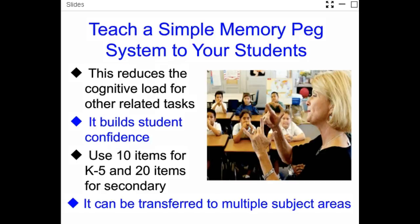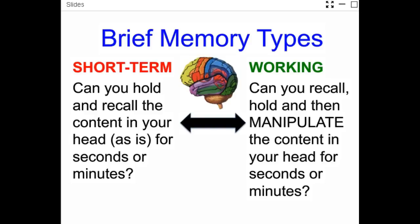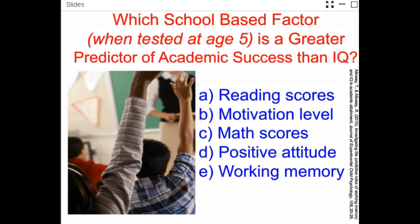There are plenty of different memory types: long-term memory, short-term memory, and working memory. Quick quiz: which school-based factor, when tested at age five, actually predicts academic success even better than IQ? If you picked B or D, those are pretty good answers, but the correct one is E — working memory. Working memory is actually a better predictor than IQ.